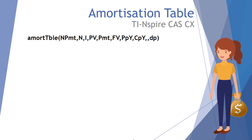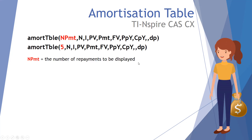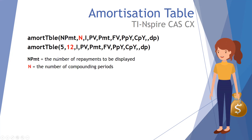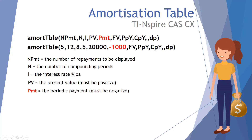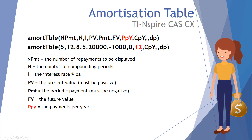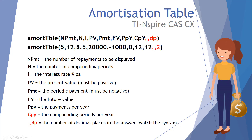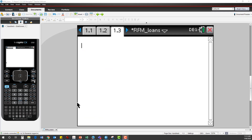First, type in the number of payments to be displayed — we wanted five. The number of compounding periods was monthly, so 12. The interest rate per annum was 8.5. The principal value was twenty thousand dollars, entered as a positive. The periodic payment was one thousand dollars, entered as a negative. The future value FV we want down to zero. PPY — payments per year — is 12. CPY — compounding periods per year — is also 12. Then a double comma, and DP is the number of decimal places — we want two.